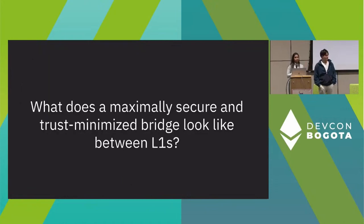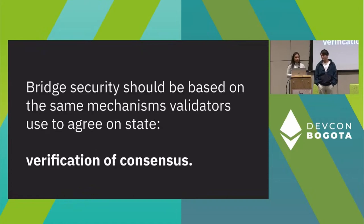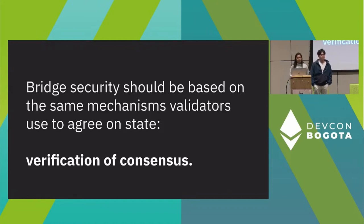So let's start talking about solutions. What does a maximally secure and trust-minimized bridge look like between L1s? We already have a mechanism for a decentralized group of people to come to agreement on the state of a chain — that's called the consensus protocol. The key idea, very simply, is that bridge security should be based on the same mechanisms that validators already use to agree on state, which is verification of consensus. If you're able to verify the consensus of a source chain in the execution layer of a target chain, then in a trust-minimized way, you can know the state of the source chain without having a centralized intermediary like a multi-sig.